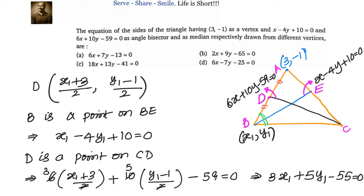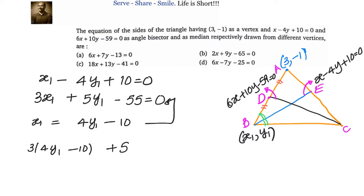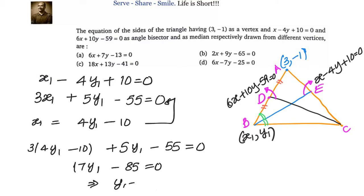We now have two equations to solve: equation (1) x1 - 4y1 + 10 = 0, and equation (2) 3x1 + 5y1 - 55 = 0. Using the substitution method, let x1 = 4y1 - 10 and substitute into equation (2): 3(4y1 - 10) + 5y1 - 55 = 0, giving 17y1 - 85 = 0, so y1 = 5. Then x1 = 4(5) - 10 = 10. So B = (10, 5).